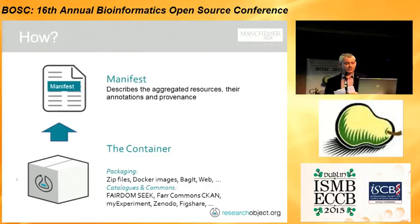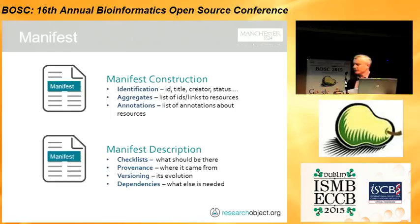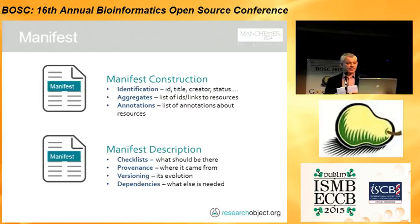The manifest describes the aggregate resources and their annotations and provenance. The manifest itself has things about identification — things like an ID, title, creator, status — and the things that it aggregates: the list of things you're putting into that container and some annotations about those assets. There's also a manifest description, and you can have a profile which allows a checklist of what should be there, and this can get more and more detailed.